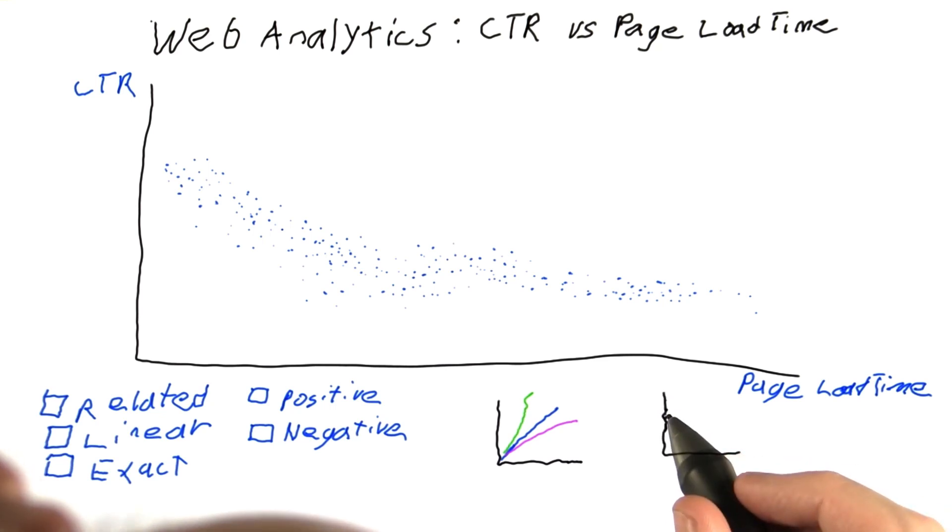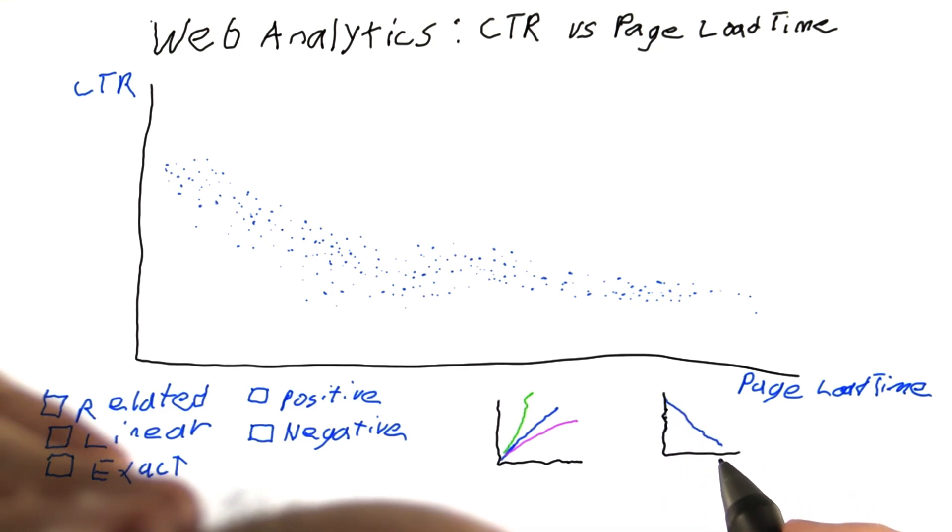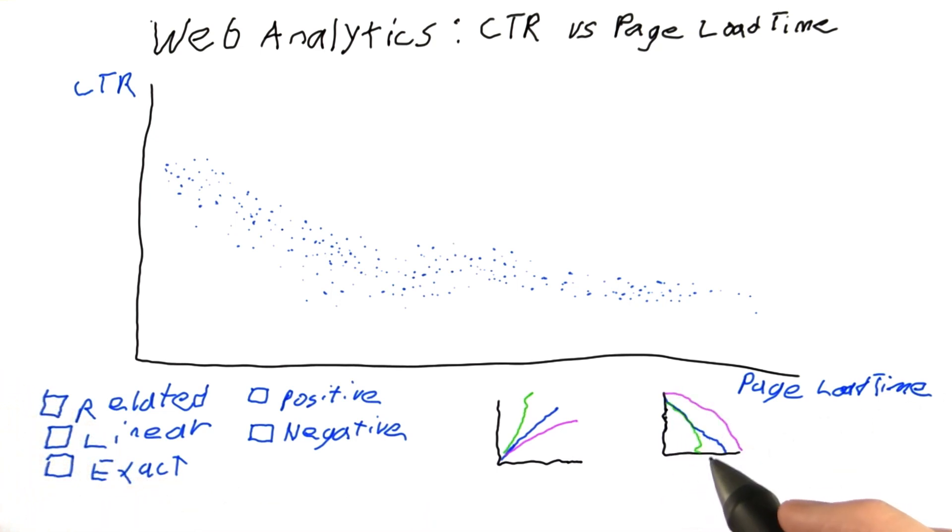Whereas a negative linear relationship would look like this. But this and this are also negative relationships. So take a look at this data and check all that apply.